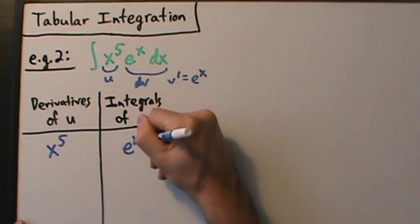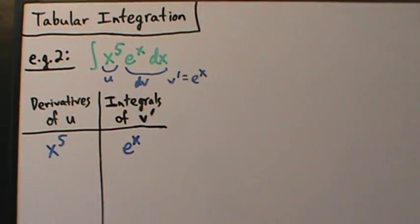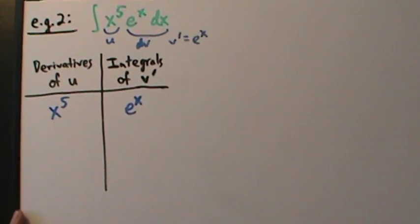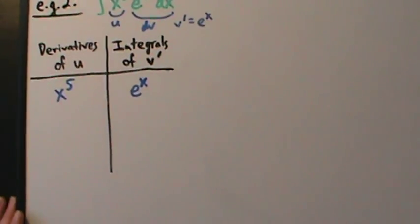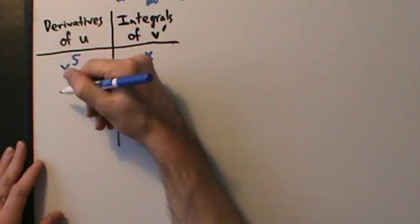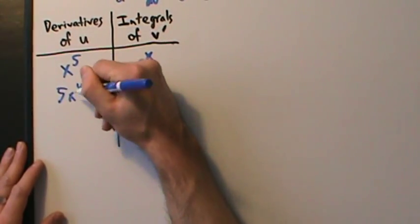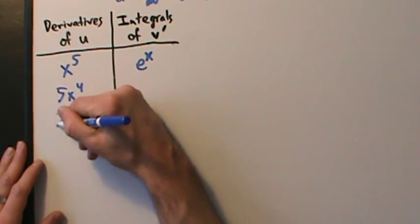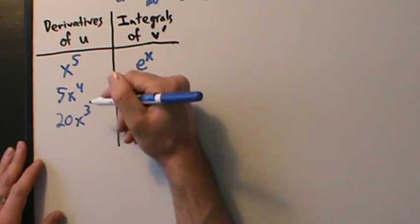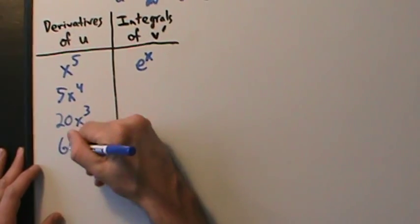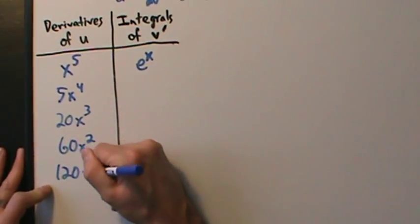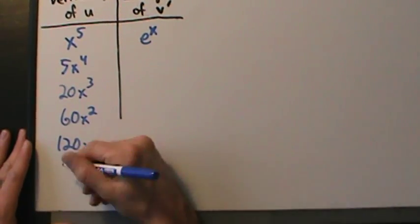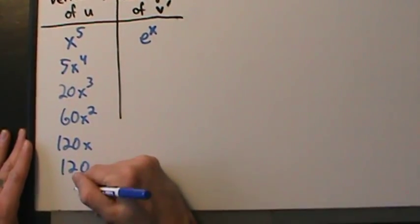So the first thing we put in the right column is v', which is eˣ. That's our first row. Now, just like in example one, we take derivatives in the left column until we get to zero. The derivative of x⁵ is 5x⁴; derivative of that is 20x³; derivative of that is 60x²; derivative of that is 120x; derivative of that is 120; and derivative of that is zero.